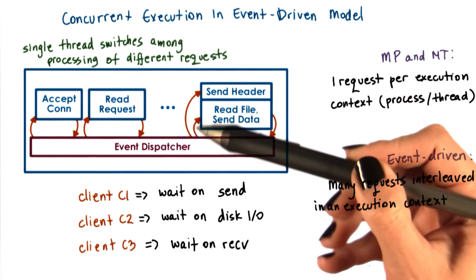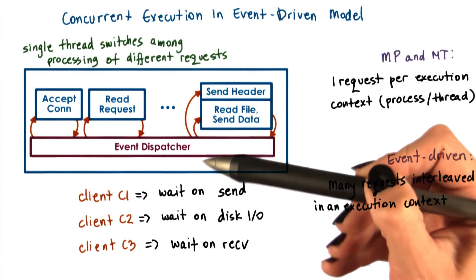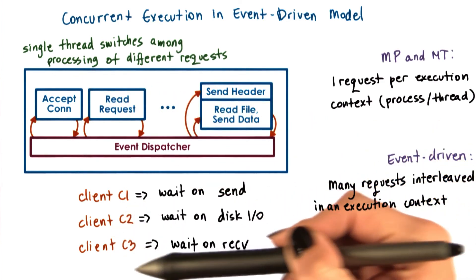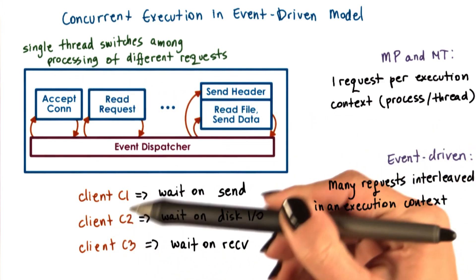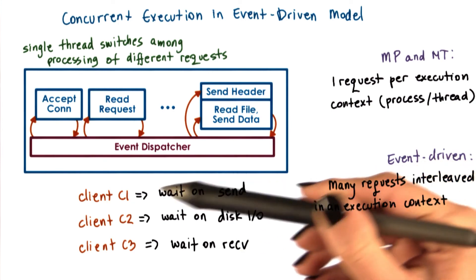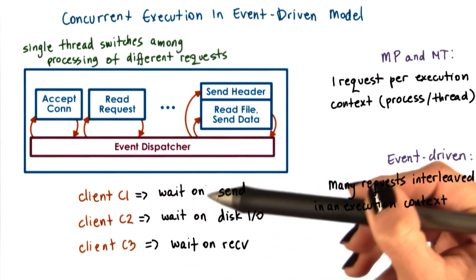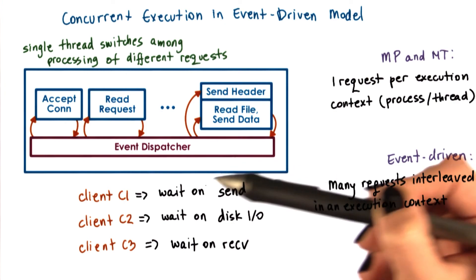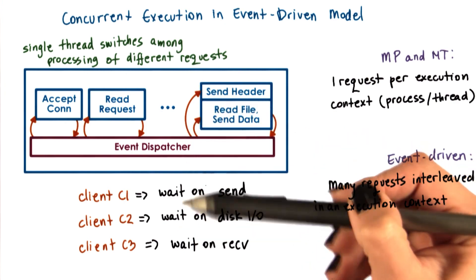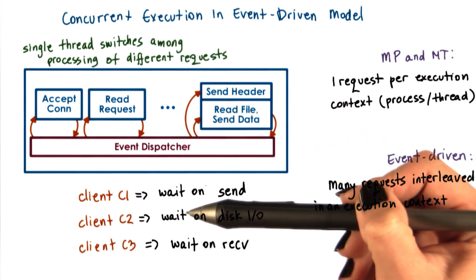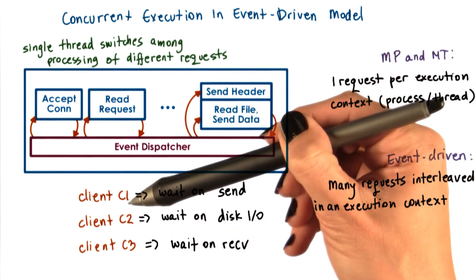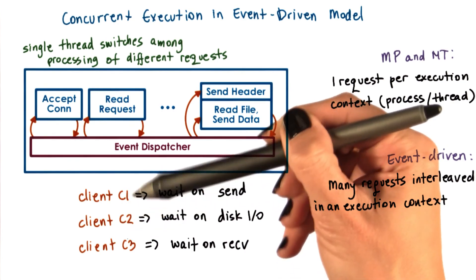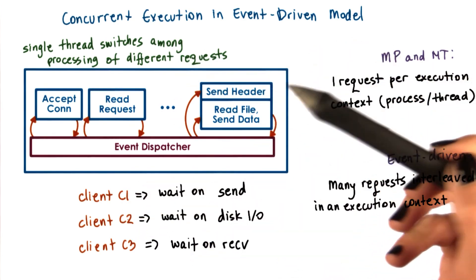So although we have only one execution context — only one thread — if we take a look, we have concurrent execution of multiple client requests. It just happens to be interleaved, given that there is one execution context. However, there are multiple client requests being handled at the same time.